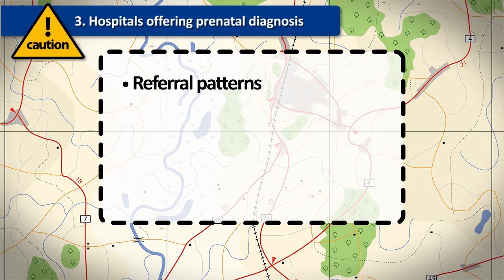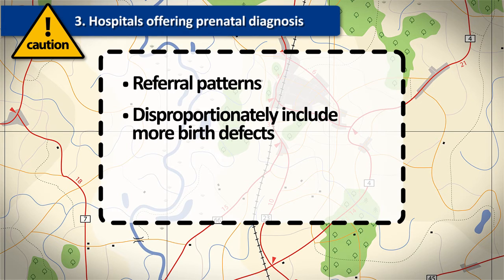Another problem related to the type of hospital is if the hospital offers prenatal diagnosis and/or provides treatment services for patients identified with birth defects. Referral patterns to this type of hospital can increase the likelihood that an affected stillbirth, elective termination of pregnancy for fetal anomaly, or neonate with a birth defect is delivered in such a specialized medical center. This means that the patient population of specialty medical centers might disproportionately include more affected cases than otherwise expected. This creates what is known as referral bias.